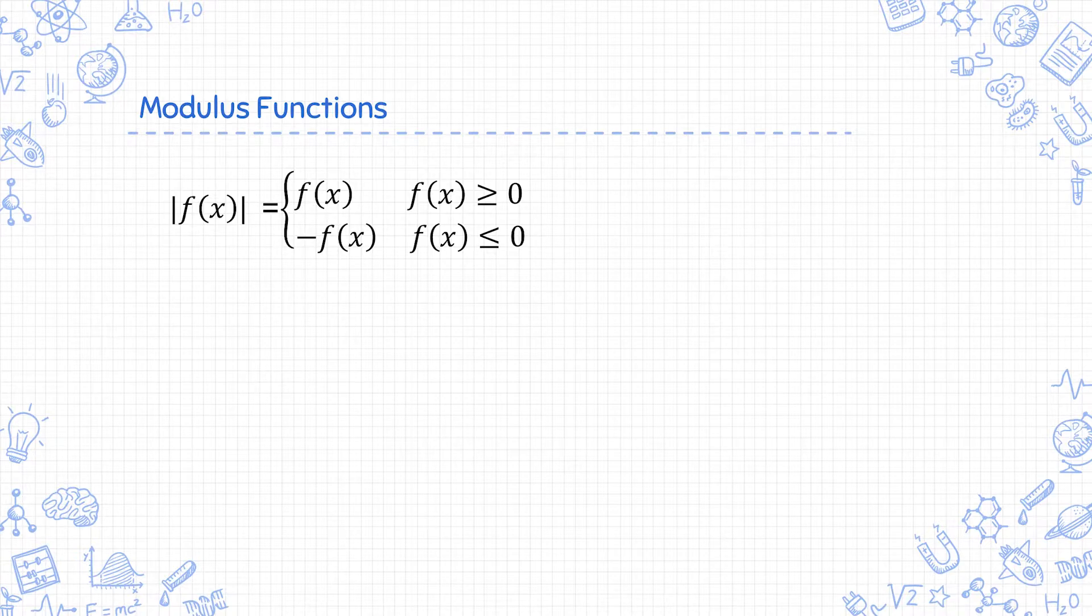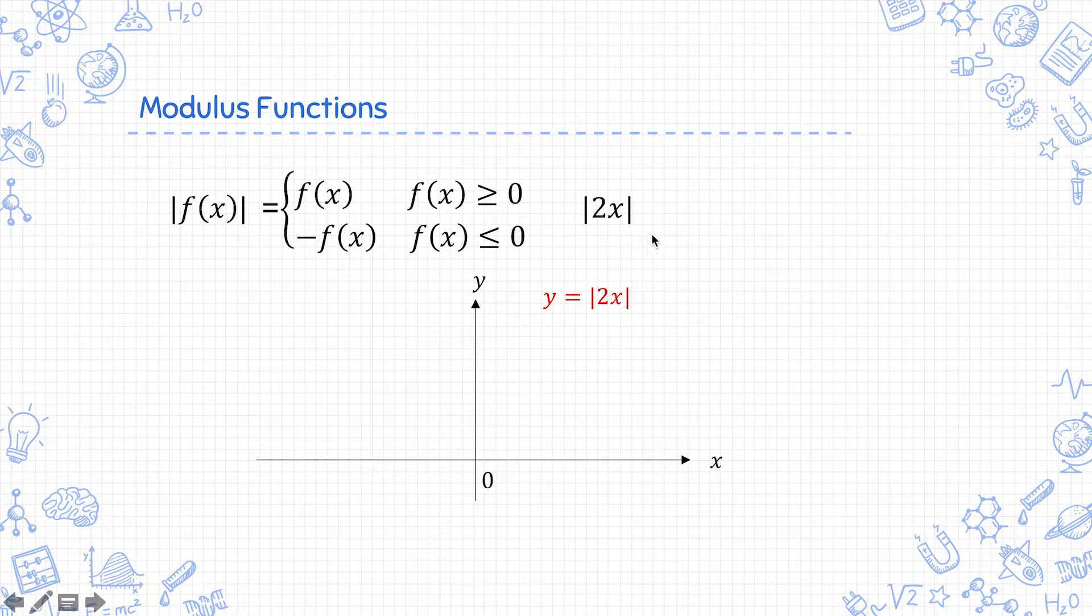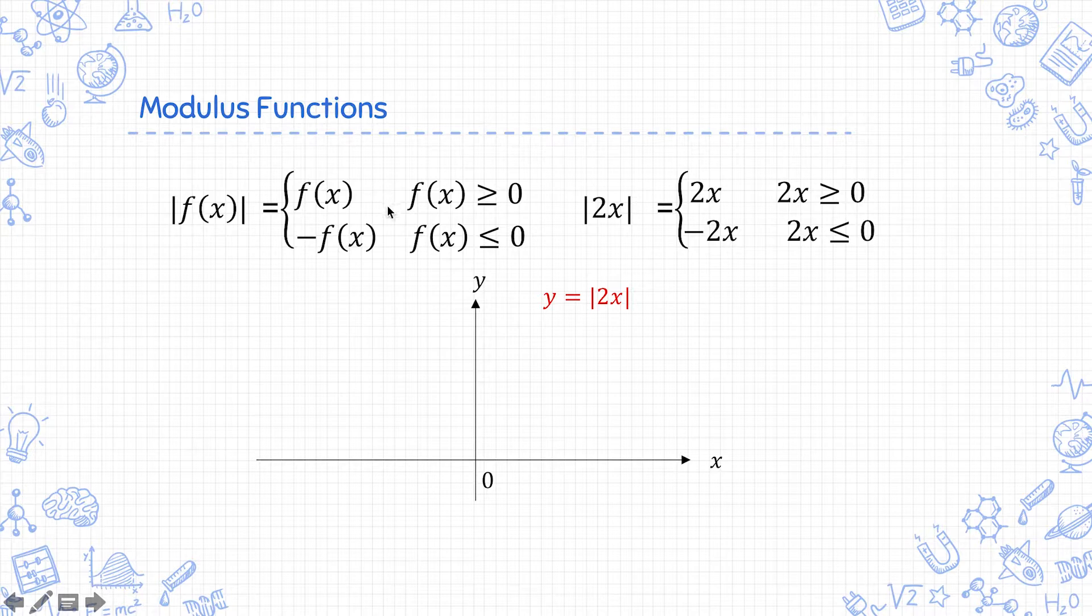I will explain this using an example. Let's say I want to plot the graph of y equals mod of 2x. Mod of 2x equals 2x when 2x is greater than or equal to 0 and mod of 2x equals negative 2x when 2x is smaller than or equal to 0. This is just following the definition here.